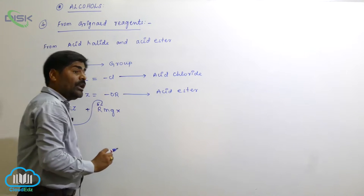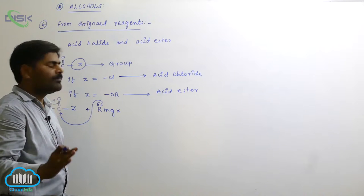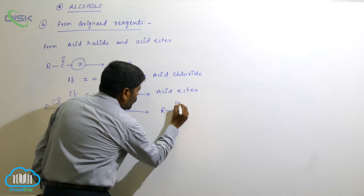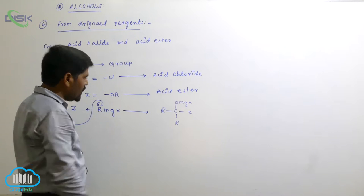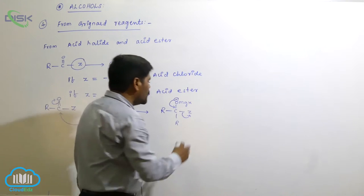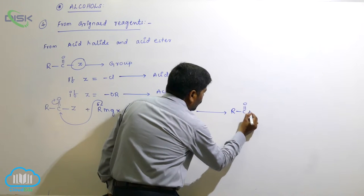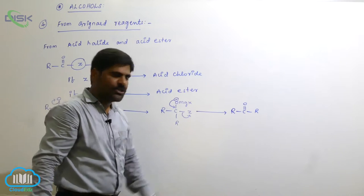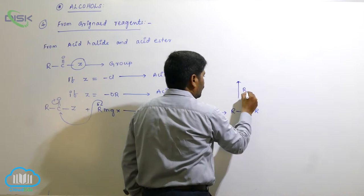The R⁻ attacks the acyl carbon — this is acyl substitution, unlike nucleophilic addition with carbonyl compounds. Z acts as a better leaving group and leaves the substrate. The intermediate ketone formed then reacts with another mole of Grignard reagent, followed by hydrolysis in acid medium or aqueous ammonium chloride, giving a tertiary alcohol.